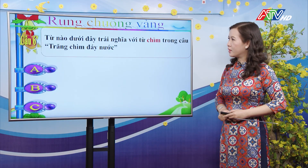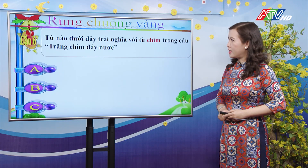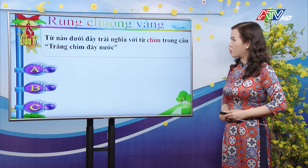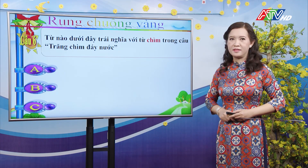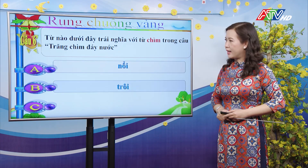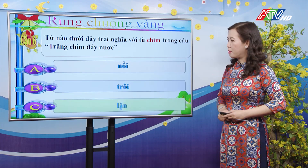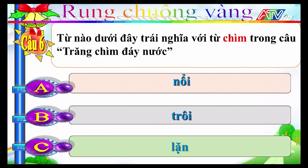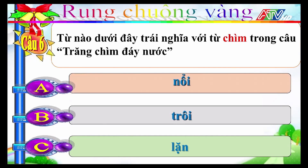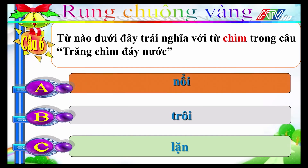Câu 6: Từ nào dưới đây trái nghĩa với từ "chìm" trong câu "Trăng chìm đáy nước"? A-Nổi; B-Rồi; C-Lặng. Đáp án đúng là A: từ "nổi" là từ trái nghĩa với từ "chìm".